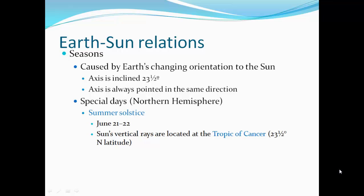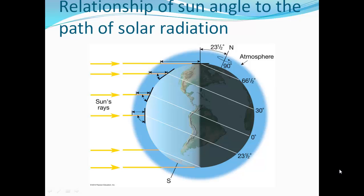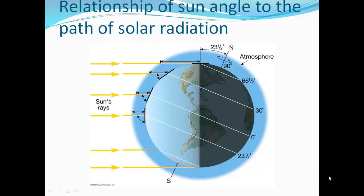Special days in the northern hemisphere: the summer solstice is June 21st–22nd. The sun's vertical rays are located at the Tropic of Cancer, 23.5 degrees north latitude. As the Earth revolves around the sun, its axial angle stays the same, so sometimes the Earth is pointing toward the sun, sometimes away. This causes different sun angles — highest around the equator and steeper toward the poles.